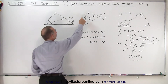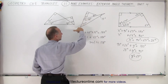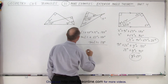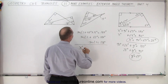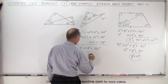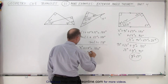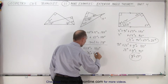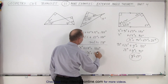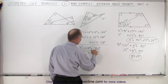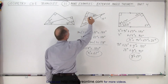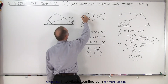Angle 1 and x form supplementary angles, so they must add up to 180 degrees. Therefore x degrees plus 118 degrees equals 180 degrees. Subtracting 118 from both sides, x degrees equals 62 degrees.